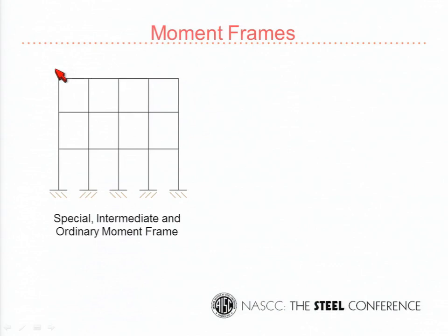Then there are moment frames. There are basically three types: special, intermediate, and ordinary. In high seismic, we're largely stuck with using the special for a couple of good reasons — they perform much better and you get a higher R factor, which means economy. There's also a special moment frame called the special truss moment frame that isn't used very much, perhaps 1% of the time.